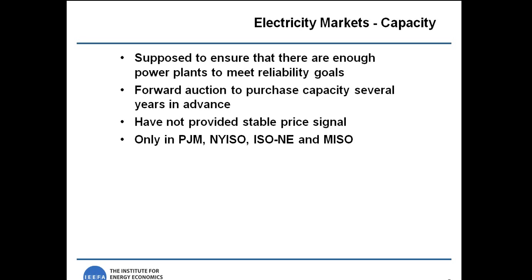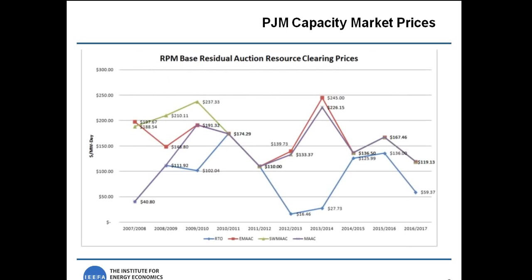In practice, it has generally not worked out this way. Prices have been very unstable, as shown by this graph of capacity market prices in PJM over the last several years. Capacity markets have done more to provide revenue to existing generation than to incentivize new capacity development. The regions with capacity markets are New England, New York, the Midwest, and PJM in the Mid-Atlantic.